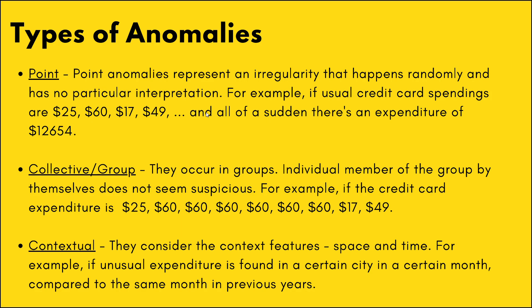Collective or group anomalies are anomalies that occur in a group. Let's say there is a series of expenditures of $60 — now $60 by itself isn't anomalous, but having it in series is. Contextual anomalies are when you consider space and time into account. Let's say you expect a city to have a certain expenditure in a month, but then the next year at the same time the expenditure is 10-fold — so that is definitely anomalous.